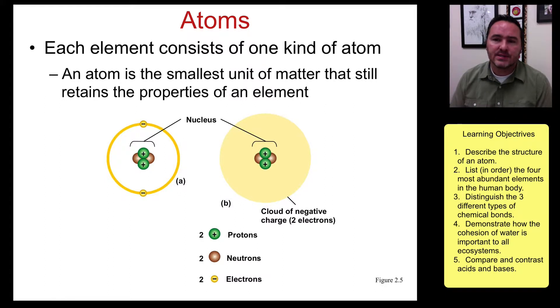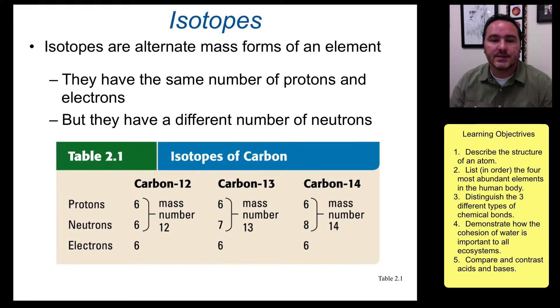Now, an element consists of one kind of atom. And so when we look at an atom, we know that it has a nucleus and that it has this cloud of negative charge around it. The nucleus can have different numbers of protons and neutrons, and also you can have different numbers of electrons in the electron cloud. And those different numbers is what determines what kind of element it is.